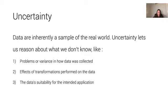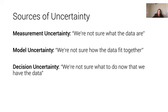So, uncertainty can arise through all of these different practices, and we typically think of three different common sources of uncertainty. We have measurement uncertainty. This occurs when we're collecting our data. You can think of this as we aren't sure what exactly the data are.